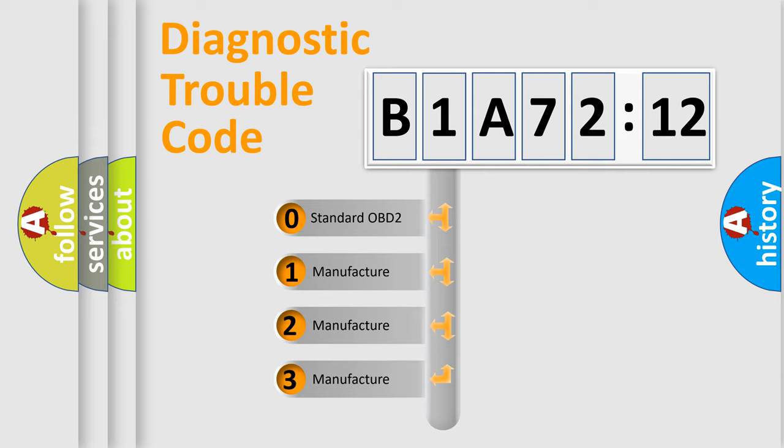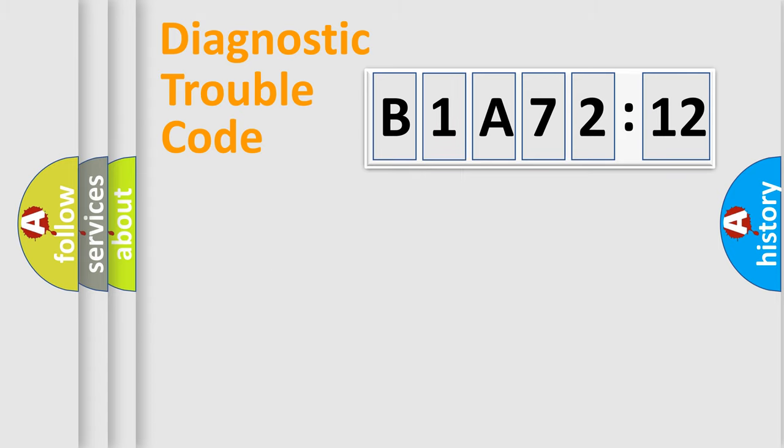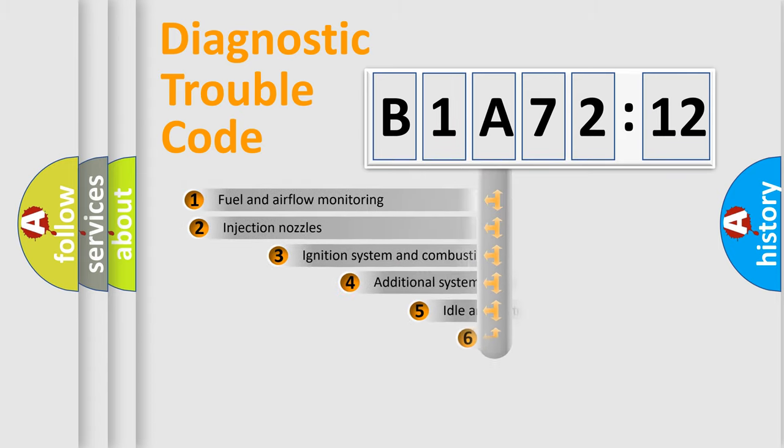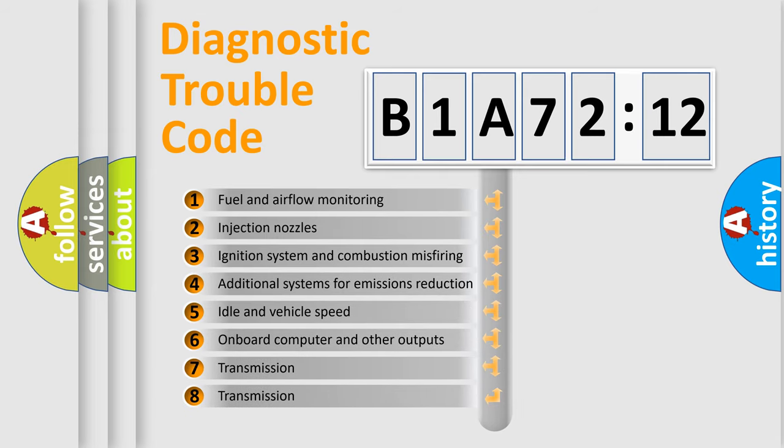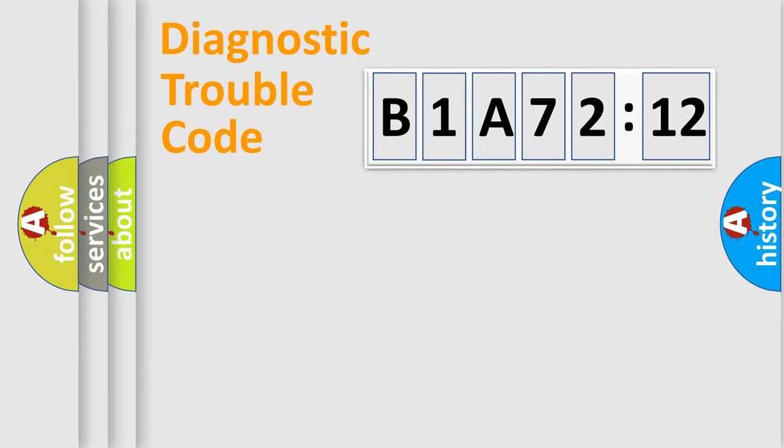If the second character is expressed as zero, it is a standardized error. In the case of numbers 1, 2, 3, it is a manufacturer-specific expression of the car-specific error. The third character specifies a subset of errors. The distribution shown is valid only for the standardized DTC code.